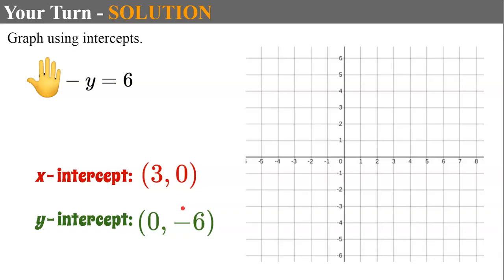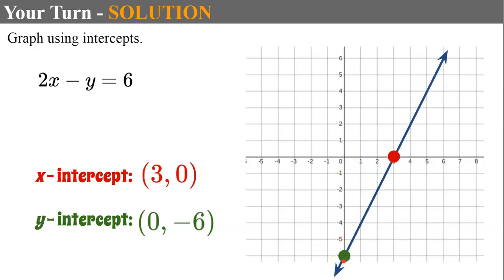Now let's plot our intercepts. First the x-intercept at (3, 0), then the y-intercept at (0, negative 6). Connect them with a line, and there you have it — the graph of 2x minus y equals 6.